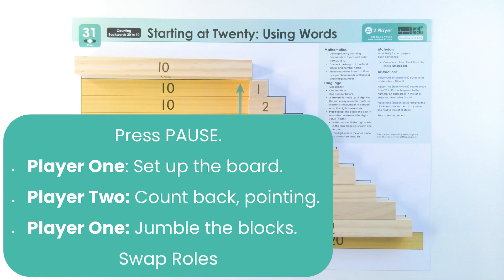Now it's your turn to count backwards from 20 to 10. Player one will set up the board. Player two will count backwards, pointing. Then player one will jumble the blocks and you'll swap roles.